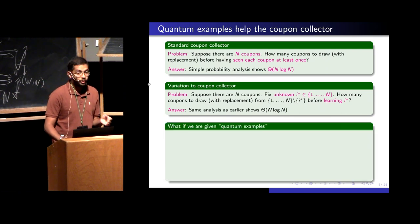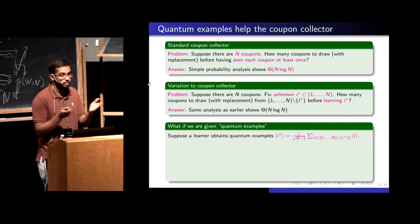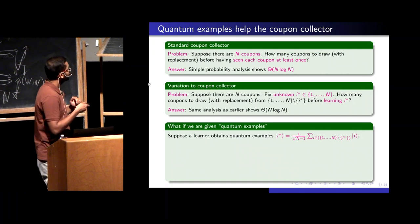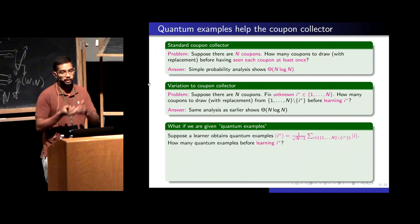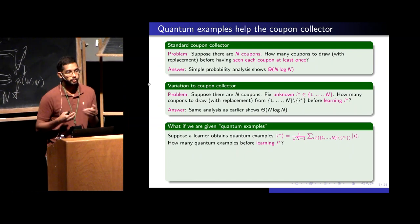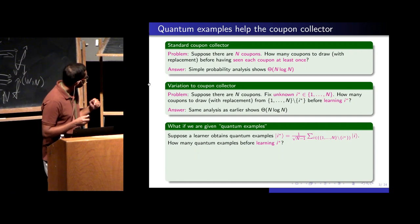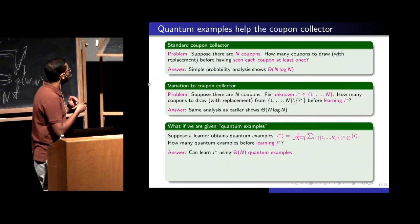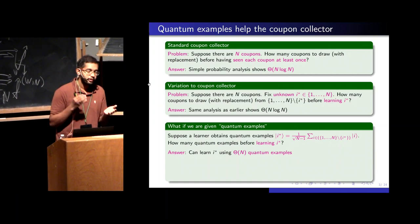What if you go quantum? Consider quantum coupons: a uniform superposition over the n minus one coupons — just the uniform superposition removing the one item I-star. I call this state psi-I-star, and I keep giving you this fixed quantum state. The question is: how many quantum coupons do you need before you realize what I-star is? The surprising answer is theta of n — it's log n better than the classical case. Given that coupon collector is such a fundamental problem, a log n improvement is quite interesting.